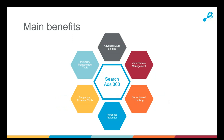I'm going to spend the bulk of today talking about some of the different features and main benefits that we see. The main ones I'll be covering are the advanced auto-bidding technologies, some of the inventory management tools — which are really good for campaigns dealing with particularly large product inventories — the budget and forecasting tools, and the multi-platform management aspect of Search Ads 360.